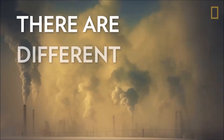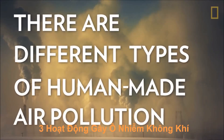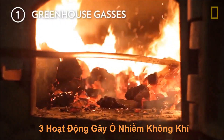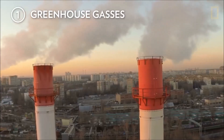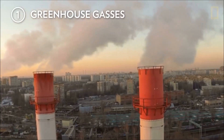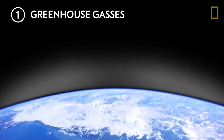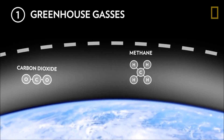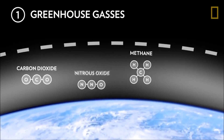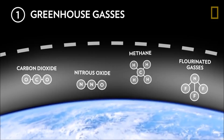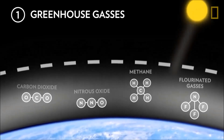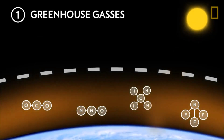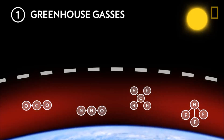There are different types of human-made air pollution. When we burn fossil fuels to produce energy, they release greenhouse gases into the air. These emissions — such as carbon dioxide, methane, nitrous oxide, and fluorinated gases — trap heat from the sun in Earth's atmosphere, leading to a rise in global temperatures.